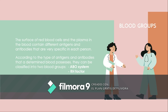Blood groups: the surface of red blood cells and the plasma in the blood contain different antigens and antibodies that are very specific to each person. According to the type of antigens and antibodies that a given blood possesses, it can be classified using two systems: the ABO system and the RH factor.